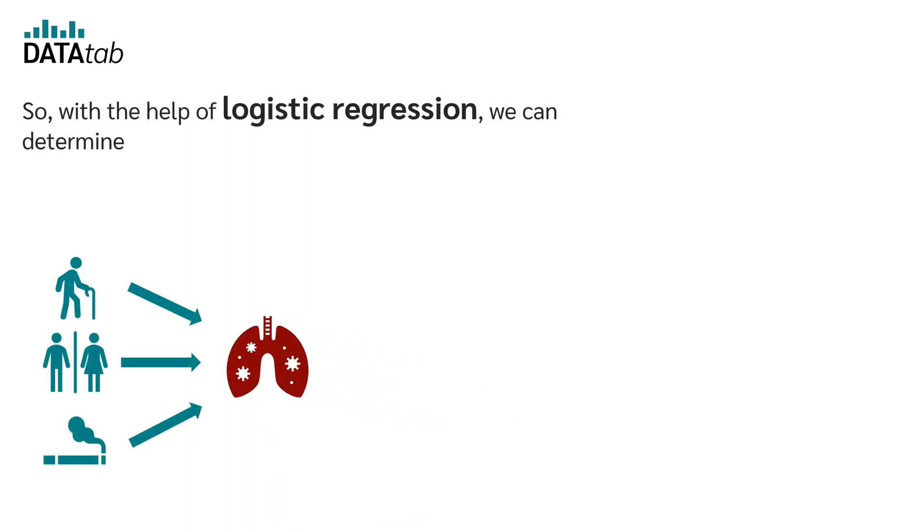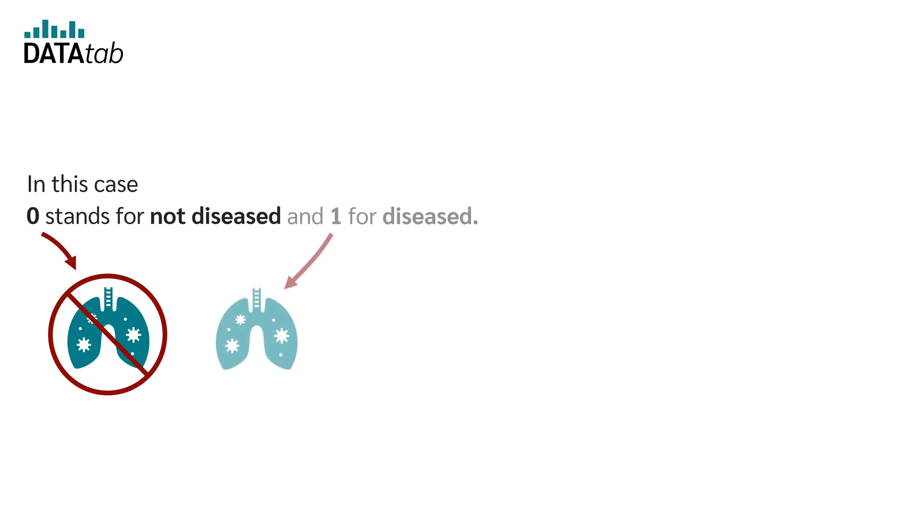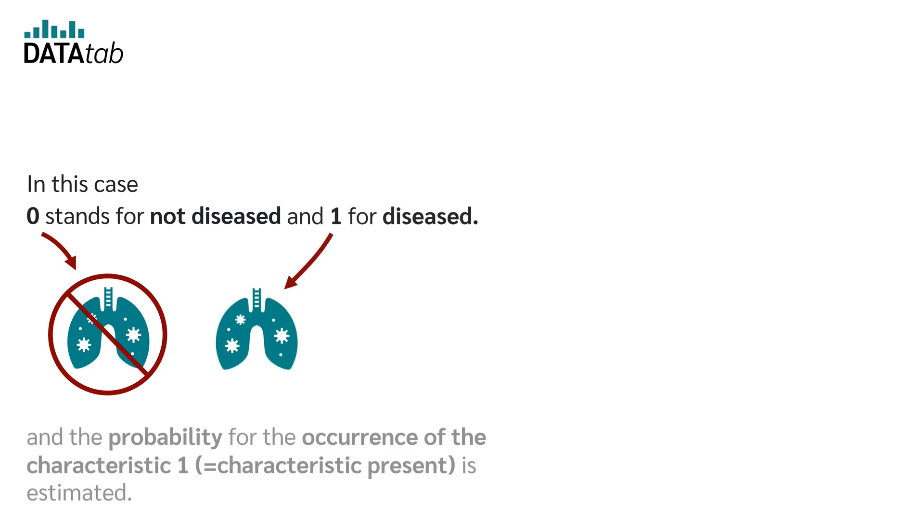So with the help of a logistic regression, we can determine what has an influence on whether a certain disease is present or not. For example, we could study the influence of age, gender and smoking status on that particular disease. In this case, 0 stands for not deceased and 1 for deceased, and the probability for the occurrence of the characteristic 1, characteristic present, is estimated.